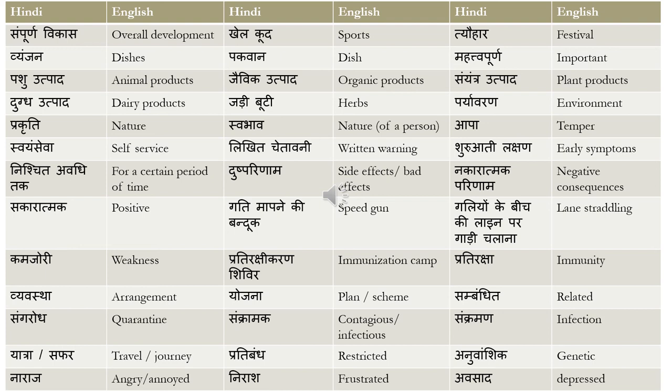'Vyavastha' means arrangement. 'Yojana' means a plan or a scheme. 'Sambandhit' means related. 'Sangrodh' means quarantine. 'Sankramak' means contagious or infectious — 'sankraman' is an infection. 'Yatra' or 'safar' means travel or a journey. 'Pratibandh' means restricted.